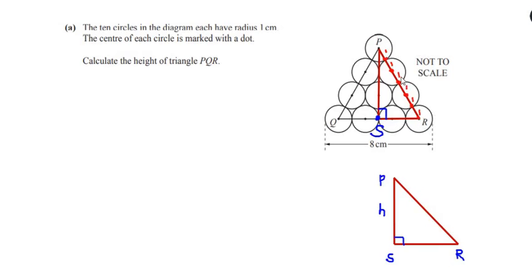So the total, counting the radii: 1 plus 1 is 2, plus 1 is 3, 4, 5, 6. The total hypotenuse is 6 centimeters. Let us mark it as 6.